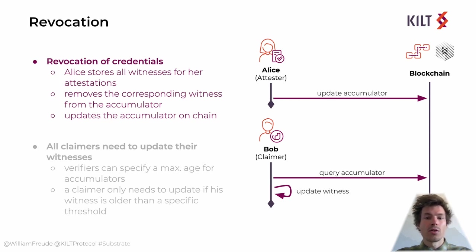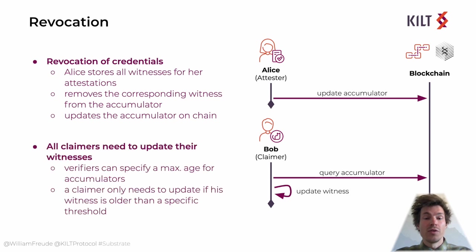When she removes the witness from her accumulator, she generates a new one, which she has to put on the chain. After that, Bob also needs to update his credential. As you can see, new versions of accumulators could be added to the chain quite frequently, and the worst case would be that Bob needs to update his credential before every verification. To prevent this, a verifier can signal the claimer that they accept not only the newest accumulator, but also accumulators which are more recent than a specified point in time during the initiation of the verification process. Now the claimer only needs to update their credential if it has not been updated after the required timestamp. And this already wraps up the protocol.